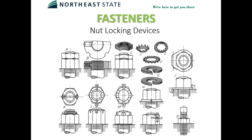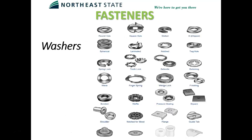Locking devices include jam nuts and lock washers. Star washers and spring lock washers go underneath nuts. There are many different types of washers — the most common is the flat washer, and the spring lock washer is another frequently used type.